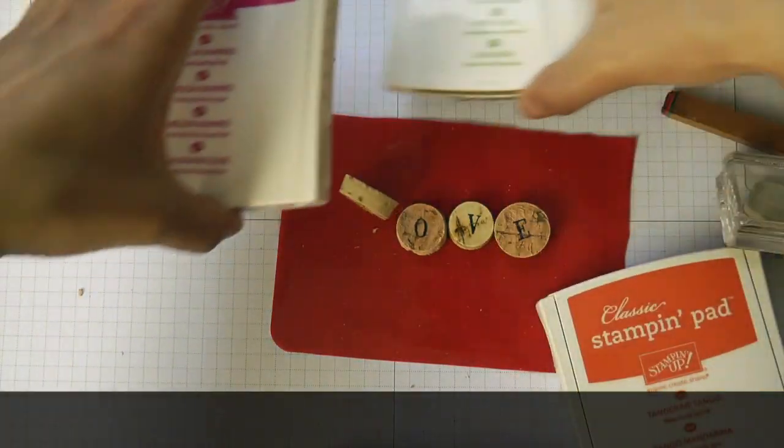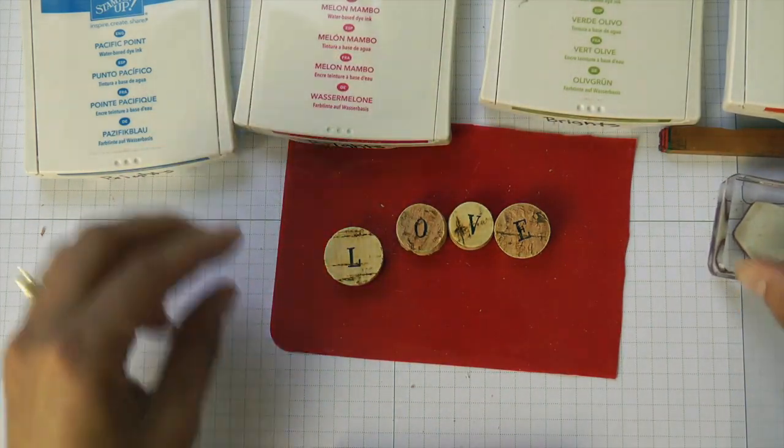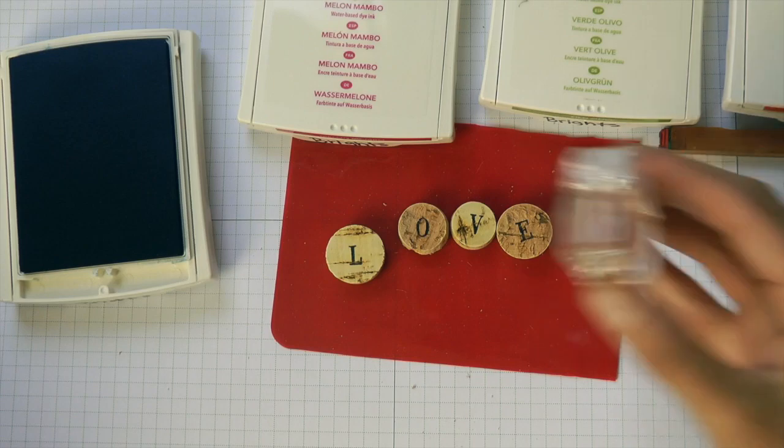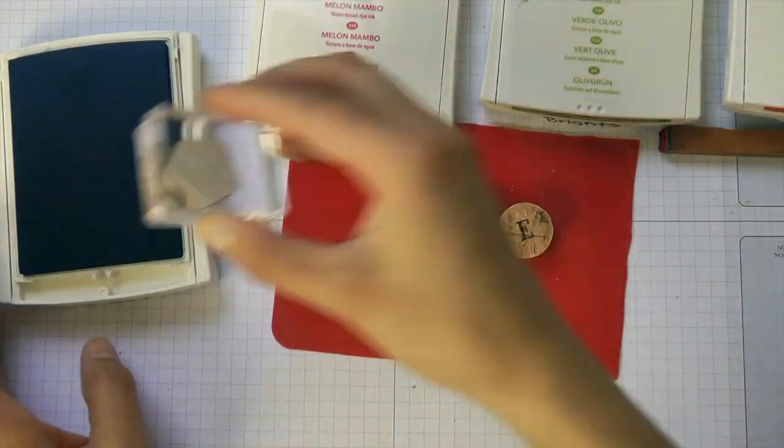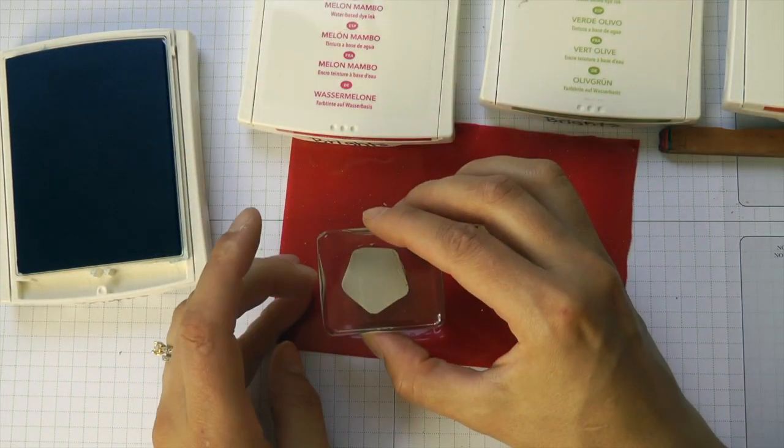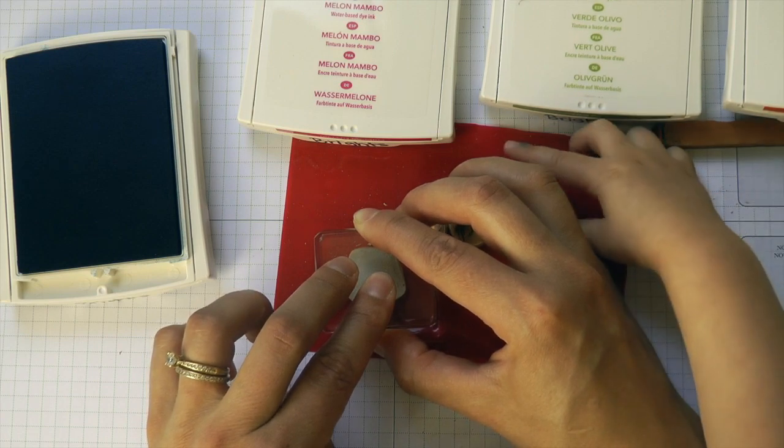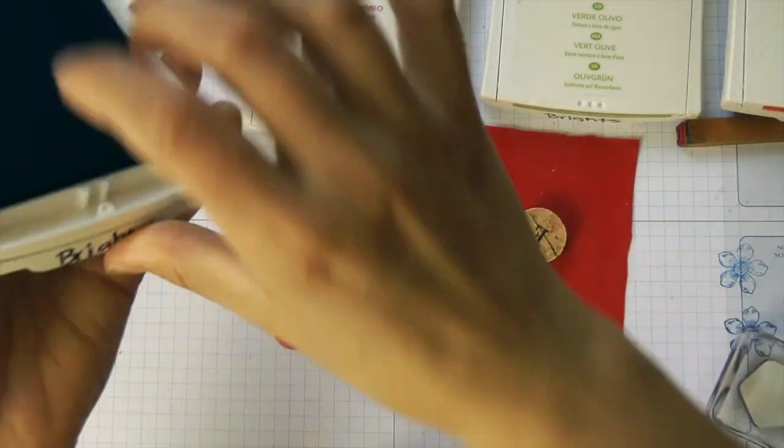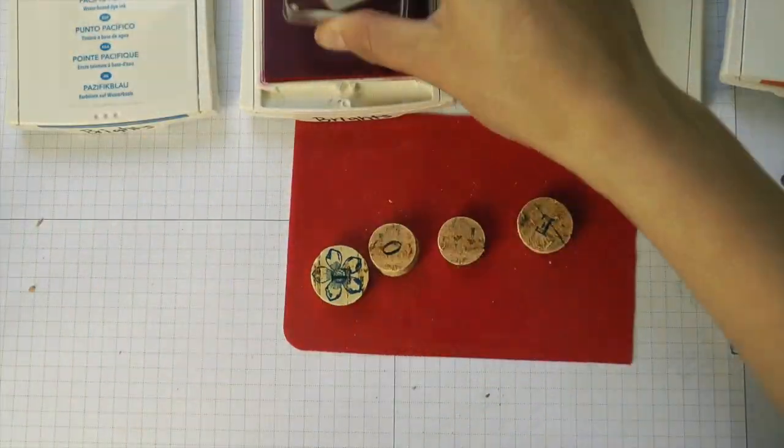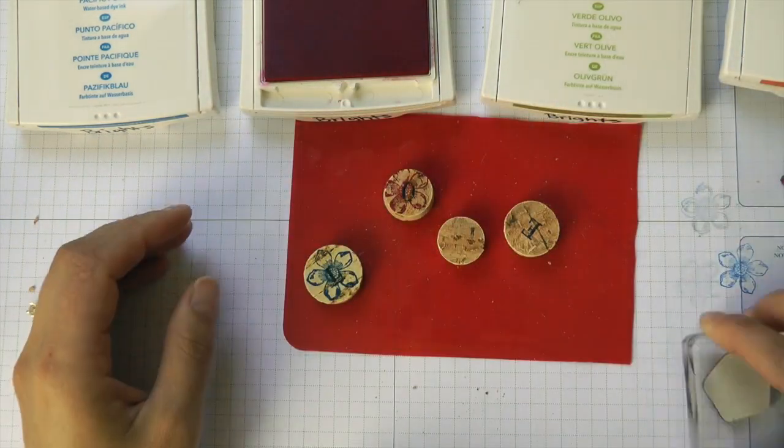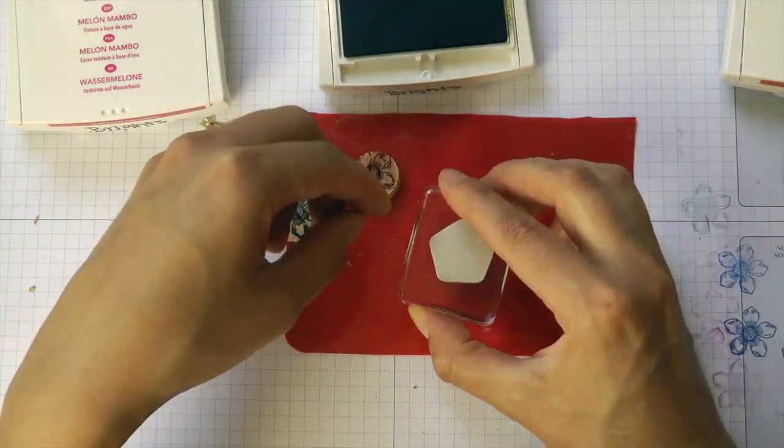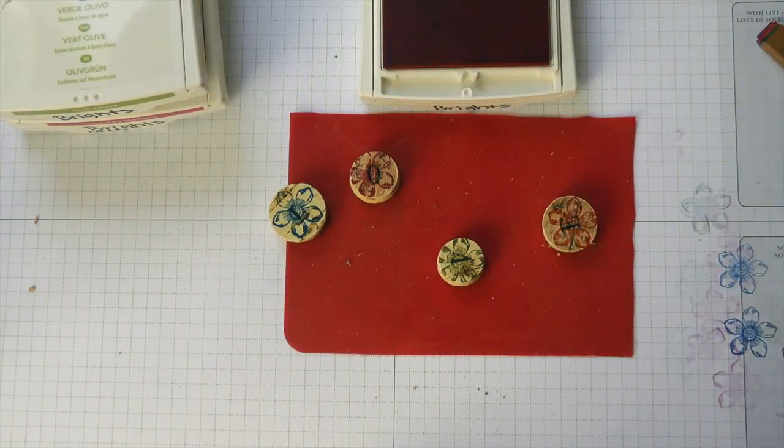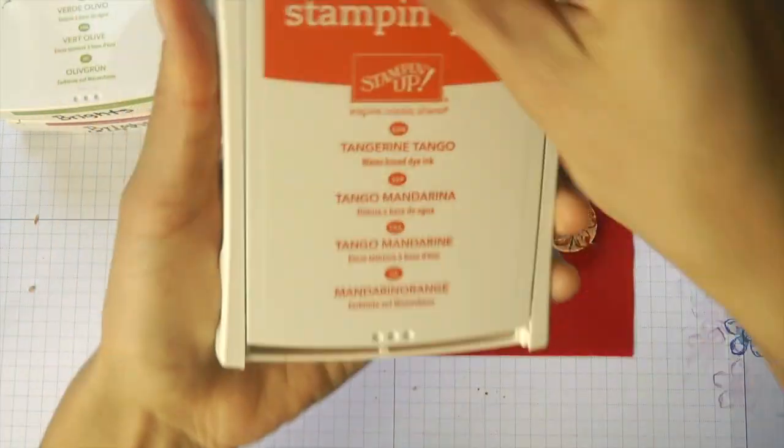We are going to just get it nice and inky because we're going to transfer from the stamp to the cork piece that we have now. This fast forward is we're just continuing stamping the colors here on each one. You have an option. If you want them lighter, you can stamp off and then stamp on to your project piece or just full strength. Because in the end, when you apply the crystal effects, it will lighten it up anyway.